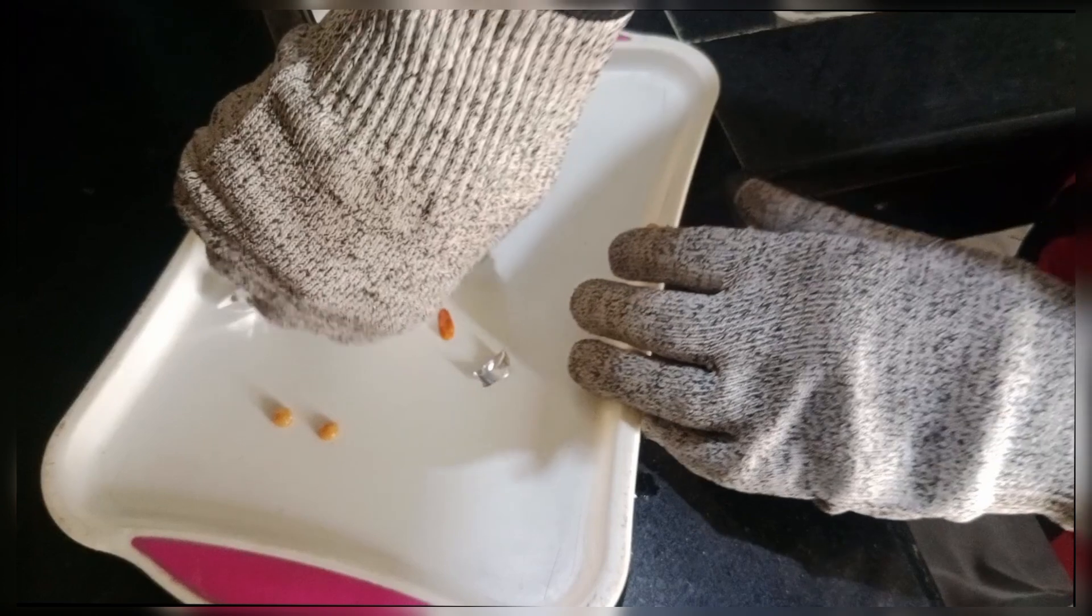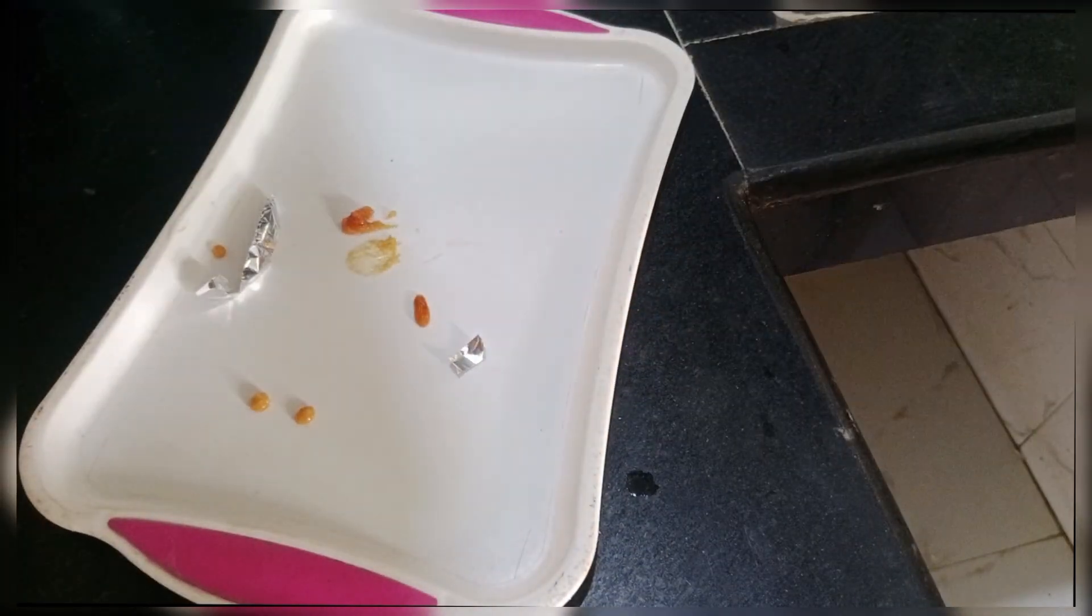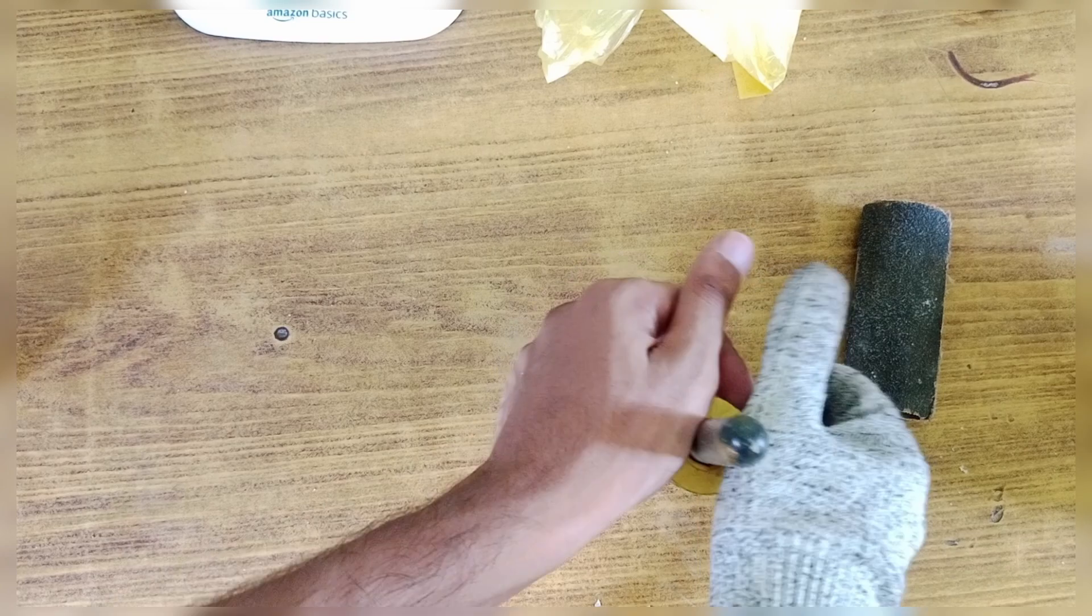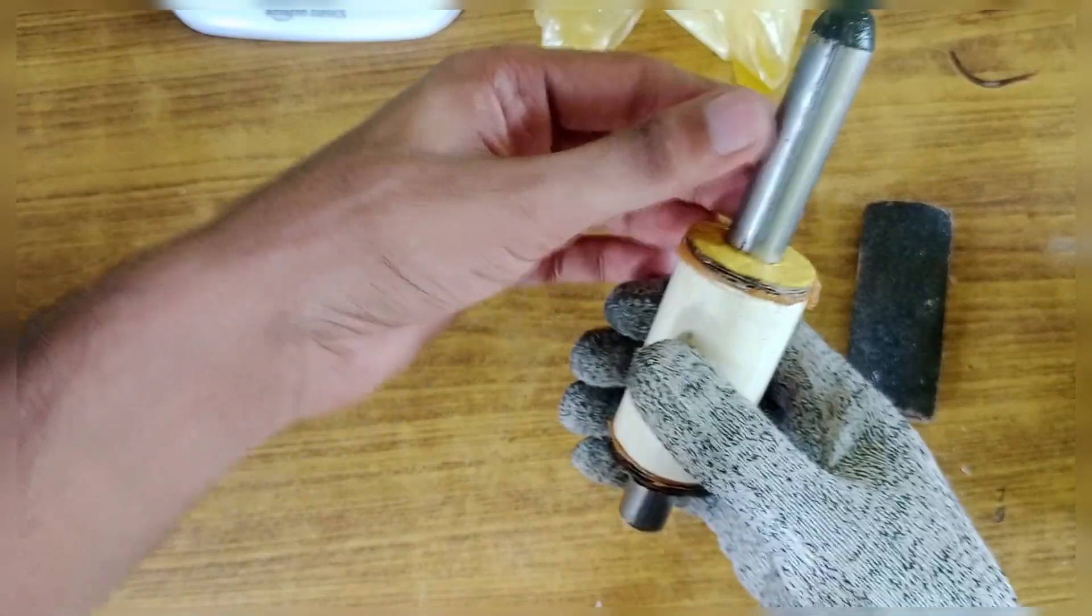Unfortunately, I couldn't record this part because I was struggling to handle the hot fuel safely. After forming the core, I let it cool for a while. But when I tried to remove the coring rod, I discovered that it was stuck inside the core.